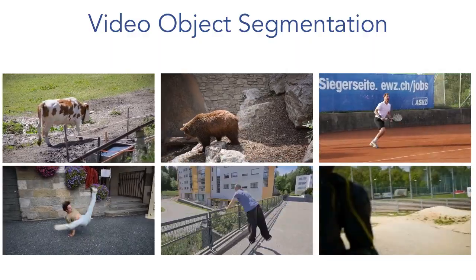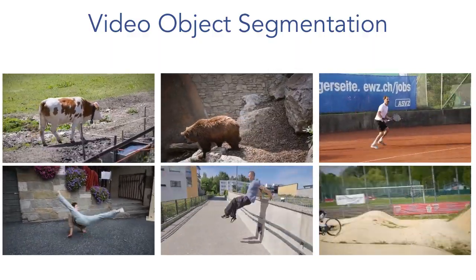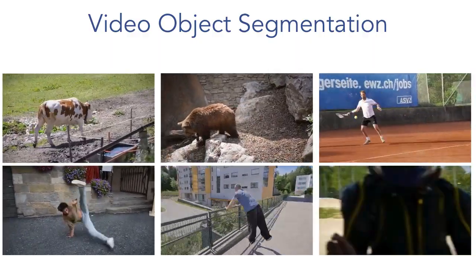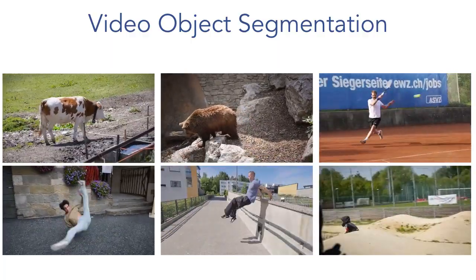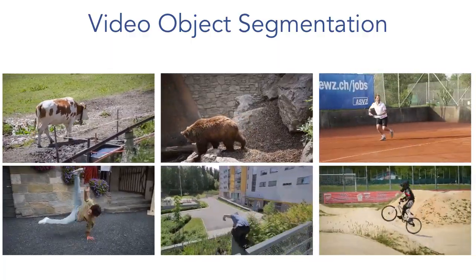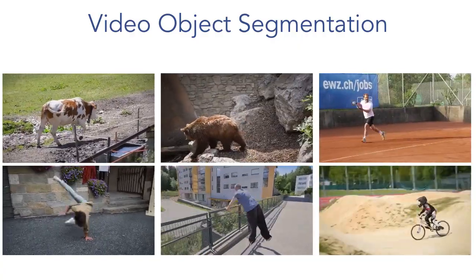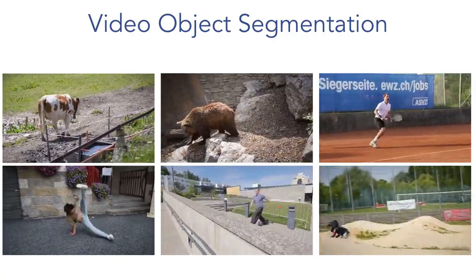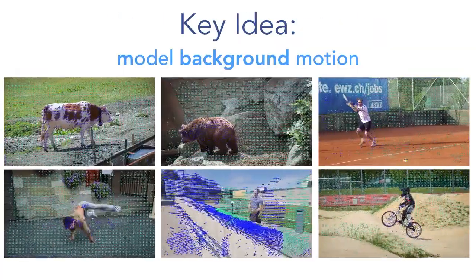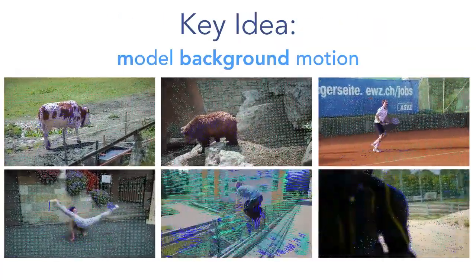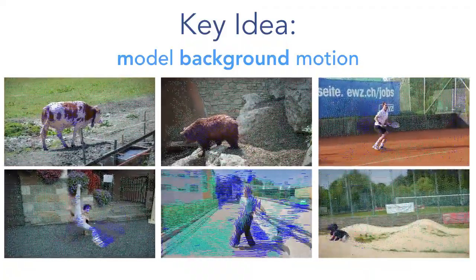Segmenting moving objects in videos is a classic problem that's seen renewed interest since the release of the Davis dataset. Here we consider the unsupervised case where no user input is supplied. Our goal is to use motion cues to differentiate foreground from background. In this paper, we show that simply and directly modeling background motion is an effective way to segment foreground objects.